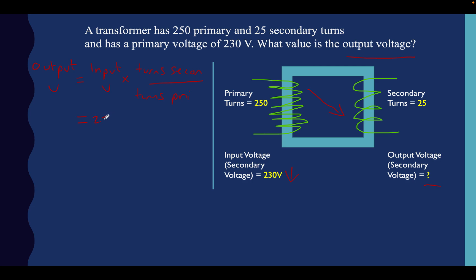So we know our input voltage is 230. That's this bit. And we're going to multiply that by this calculation here. So when we do 25 divided by 250, let's draw it out again, another layer, so we understand what we're doing. 230, still the same, multiplied by 0.1.